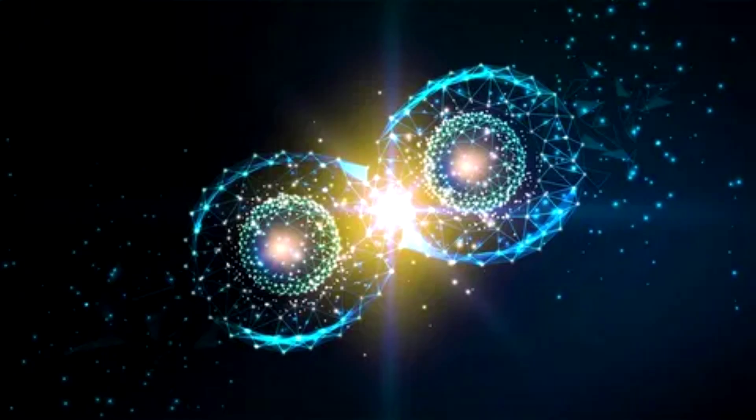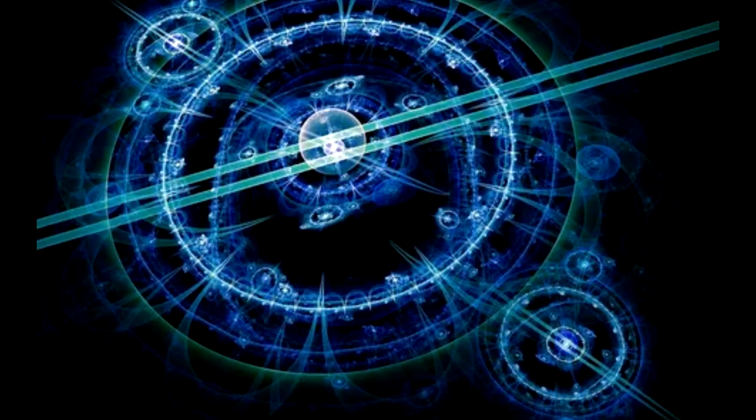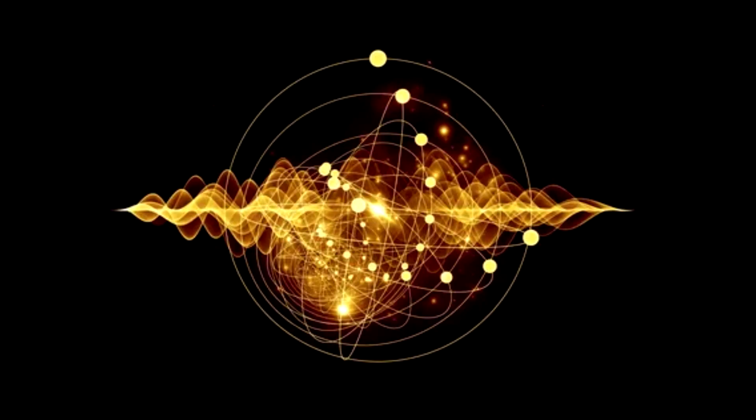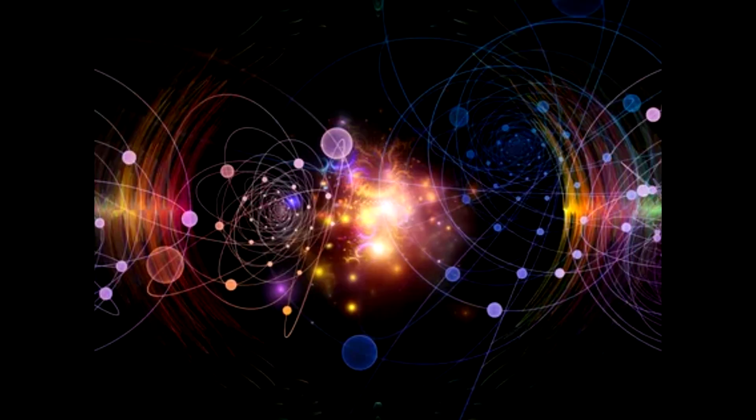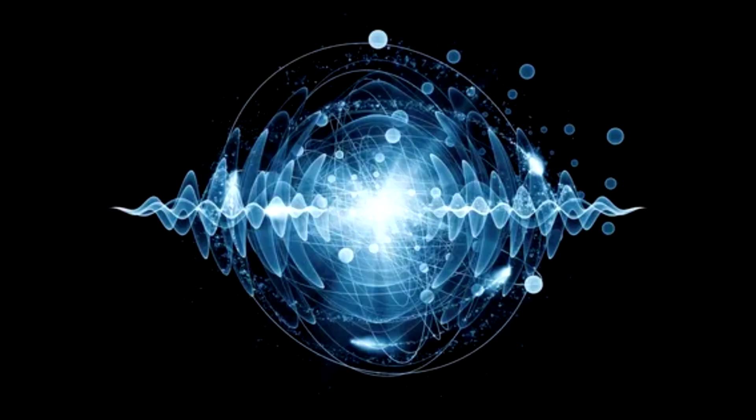This packet of energy, Einstein suggested in his paper, could be absorbed or generated only as a whole, specifically when an atom jumps between quantized vibration rates. This is where the quantum part of quantum mechanics comes from. With this new way to conceive of light, Einstein offered insights into the behavior of nine phenomena in his paper, including the specific colors that Planck described being emitted from a light bulb filament.